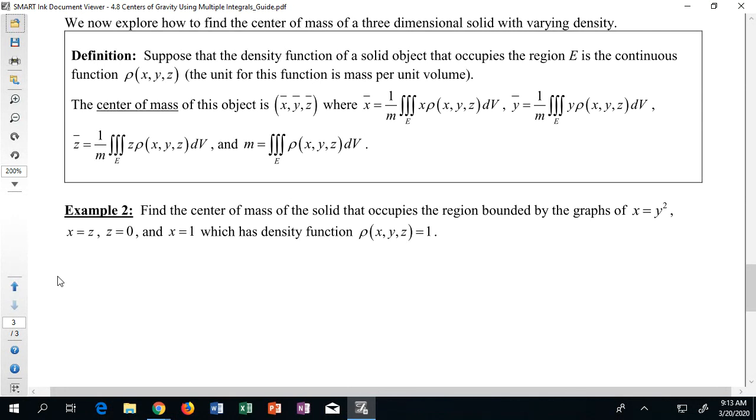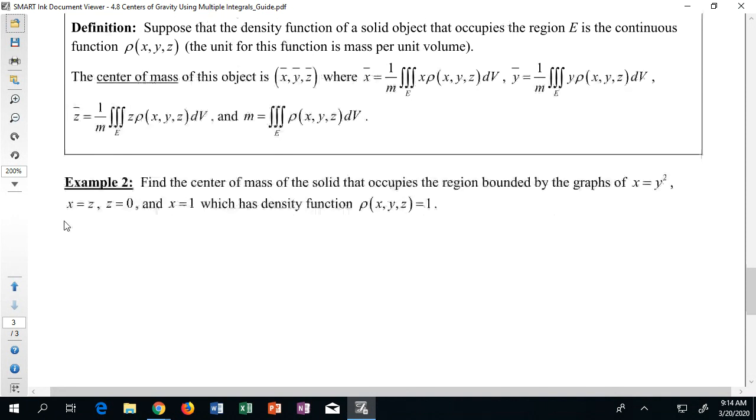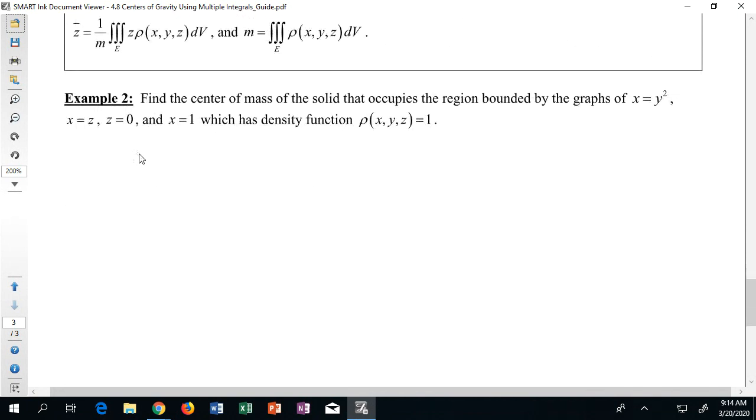So let's take a look here at example number two. Can I find the center of mass of the solid that occupies the region bounded by all of these functions and specifically which has the following density? So notice here the density function is just one at all points, so no matter where you are in the solid you always have density one. Now the hard part here is going to be trying to understand what exactly the solid looks like. I need to be able to visualize the solid thinking about my walls, my floors, and ceilings so I can understand how I can communicate this region. So I'm going to start by trying to draw a picture of the region E.